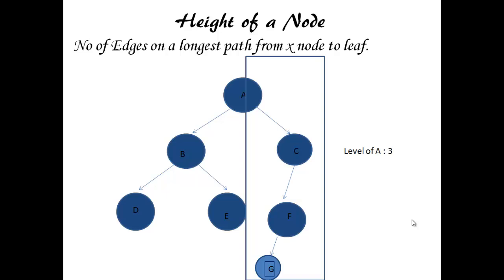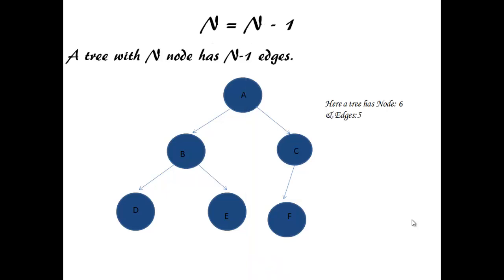Next property is N equals E plus 1. A tree with N nodes has N minus 1 edges. In this picture, a tree has nodes 6 and edges 5.